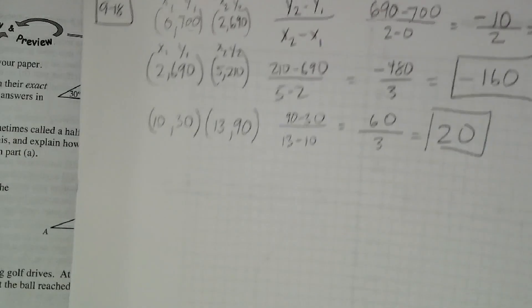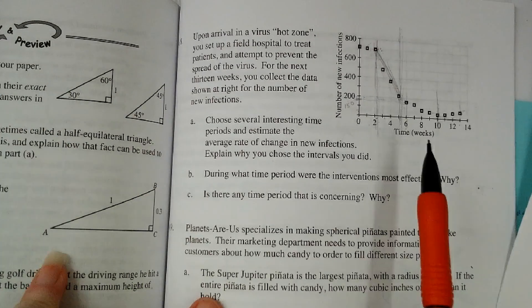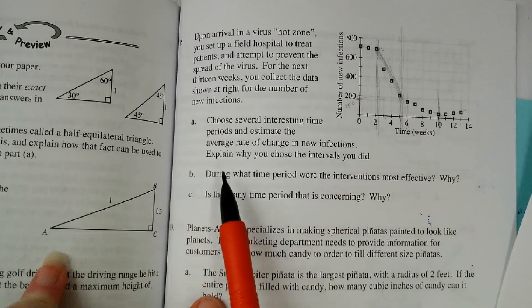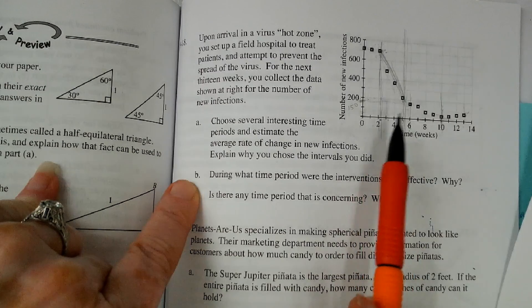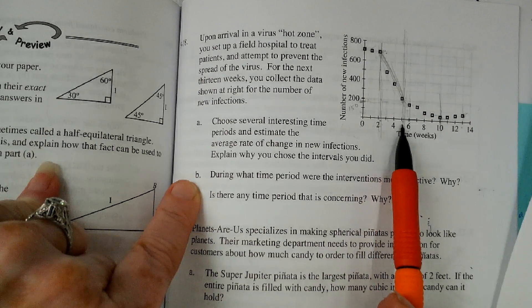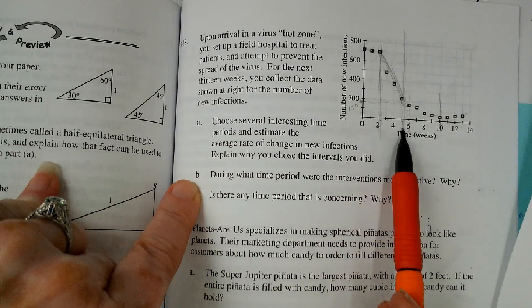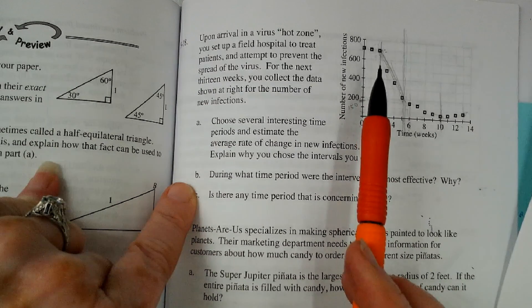You might have a different, a little bit different answer. I'm not even going to write it down, but basically the answer for letter B could be, answers may vary, but it could be between two and five weeks or between two and six weeks or something like that. And that's because it's a steeper slope.